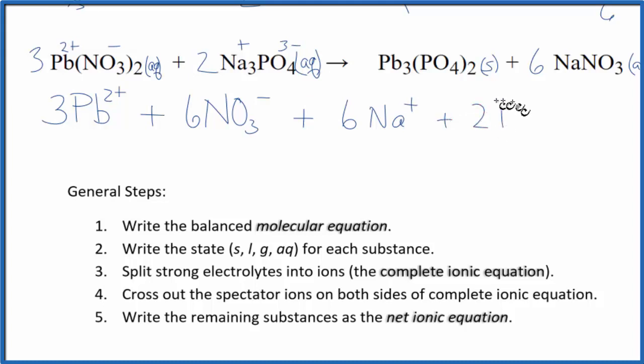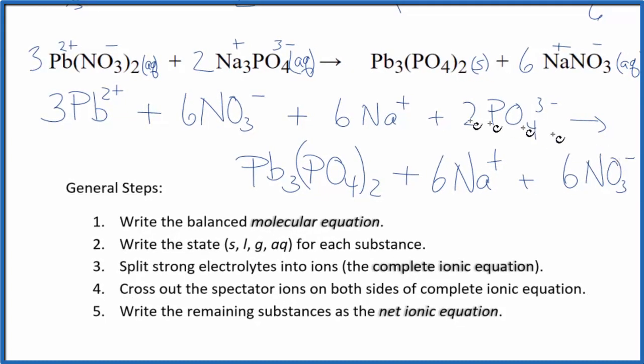Those are the reactants. In the products, this is a solid, so we don't split solids up in net ionic equations. We have Pb3(PO4)2, so that will be our lead(II) phosphate, plus six sodium ions and six nitrate ions. Those are the products.